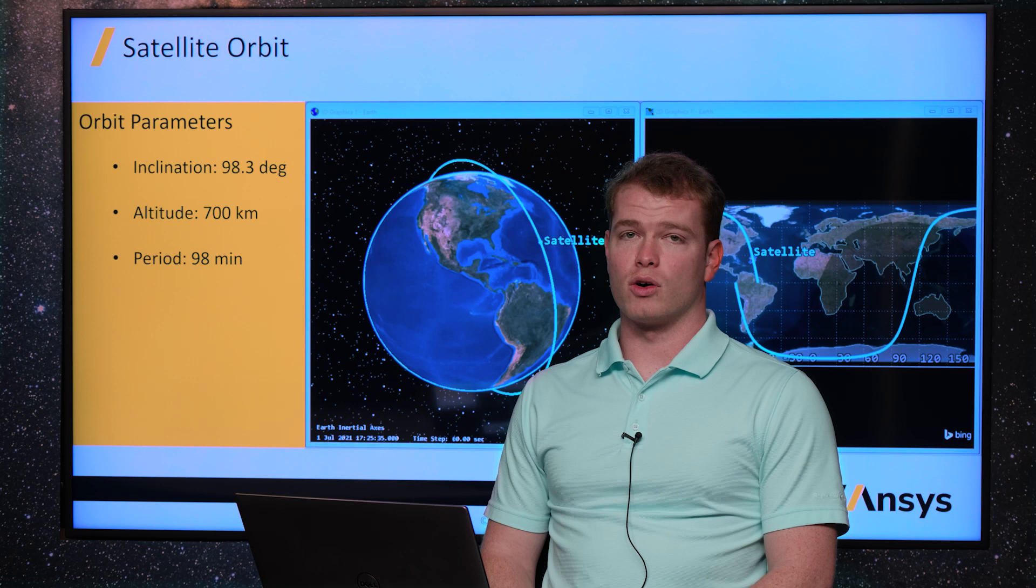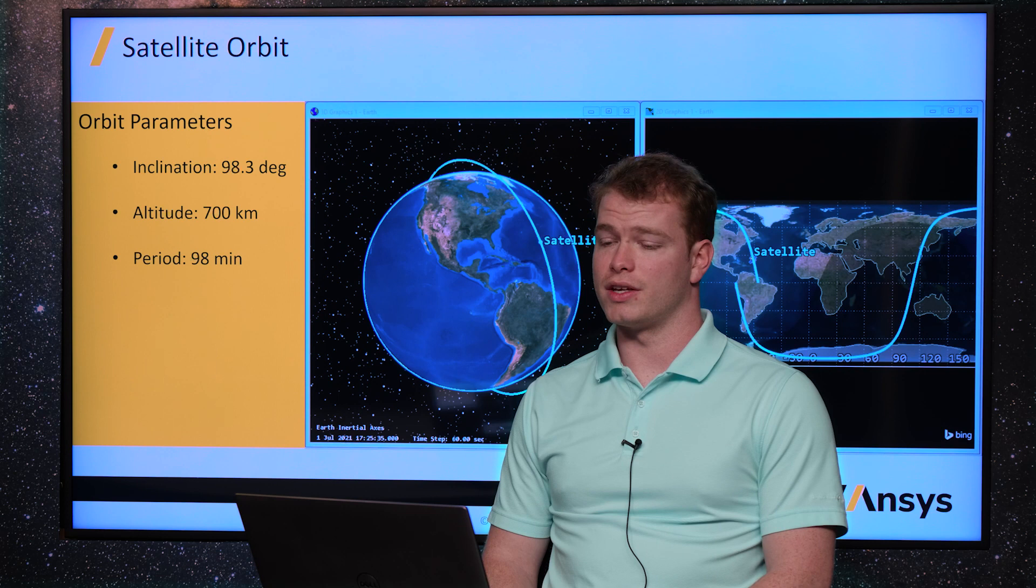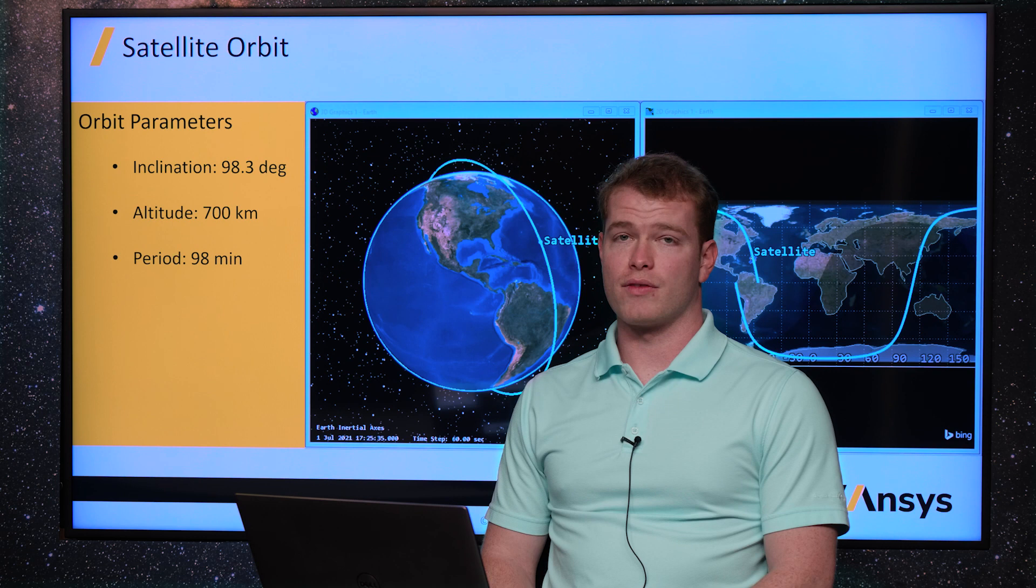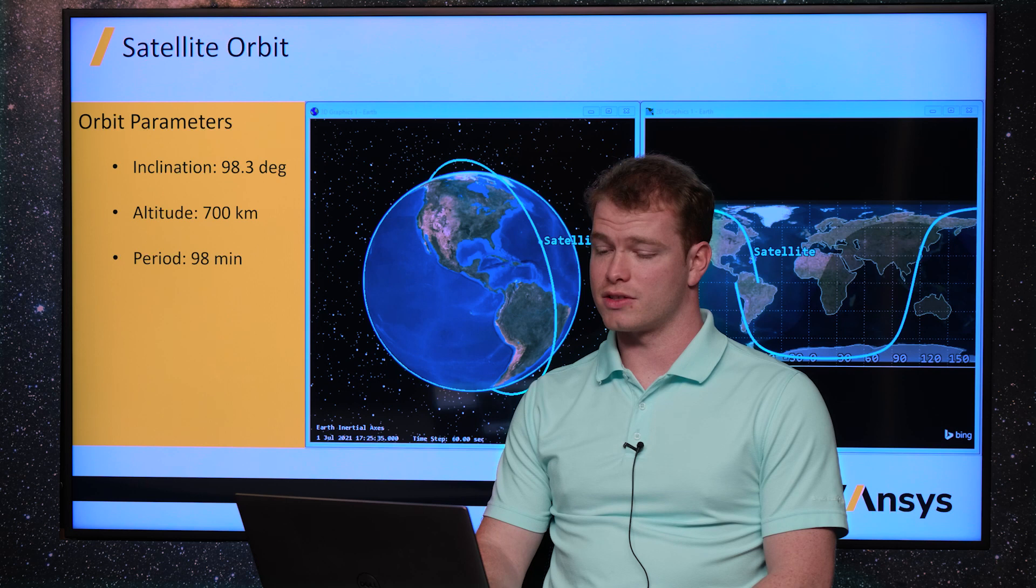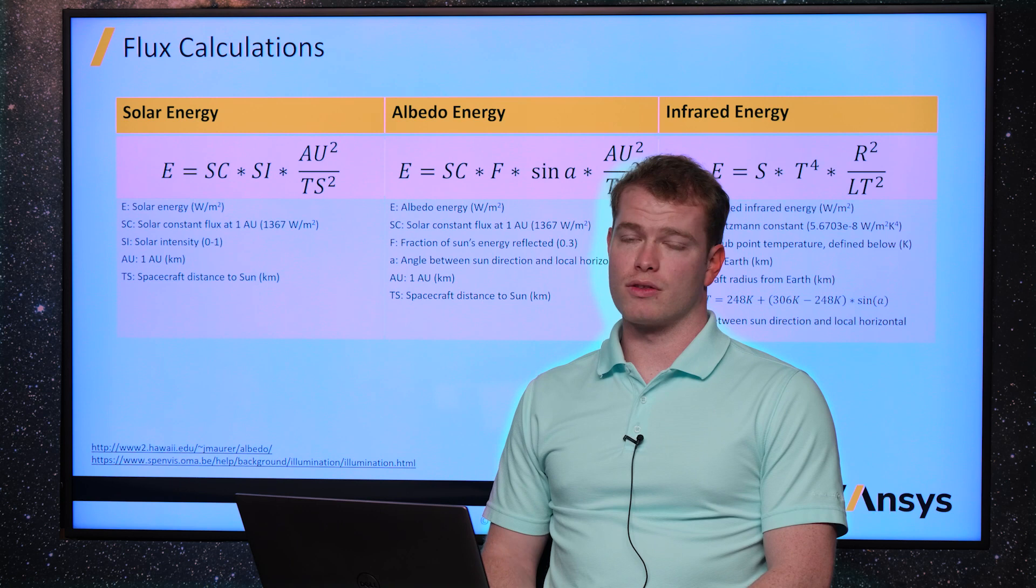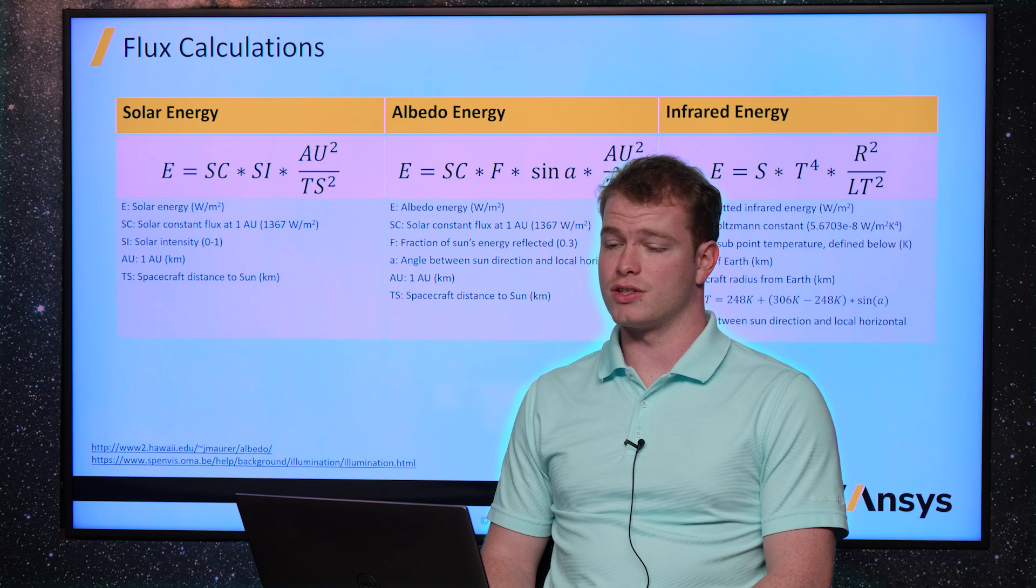So for our particular satellite orbit we're looking at today, it's a highly inclined orbit with an inclination of 98.3 degrees. It's a low-earth satellite orbiting at 700 kilometers, which gives it an average orbital period of about 98 minutes.